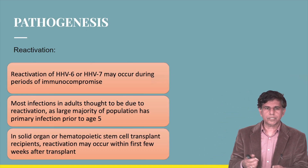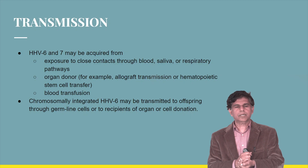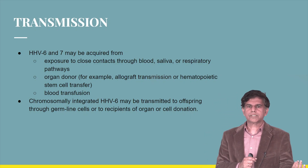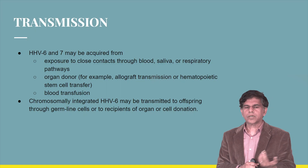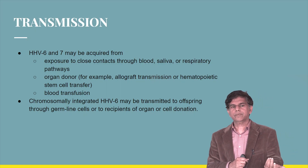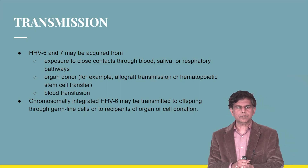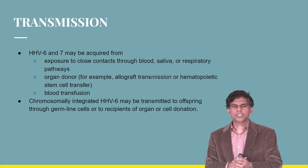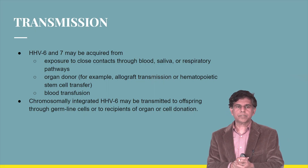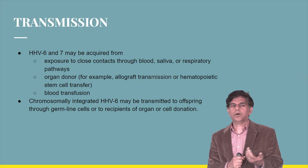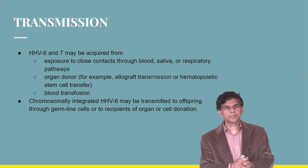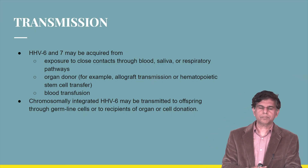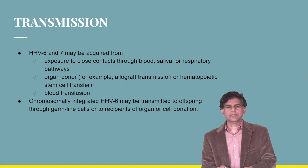Transmission is similar to other herpesviruses — through close contact via blood, saliva, and respiratory pathways, as well as organ donation and blood transfusion. Chromosomally integrated HHV-6 may also be transmitted to offspring through germline cells, or to recipients of organ or cell donation.